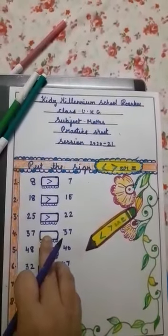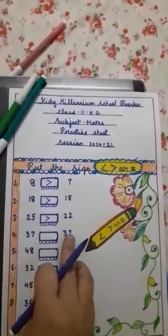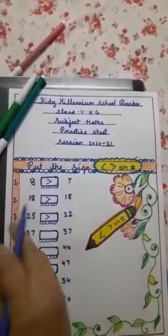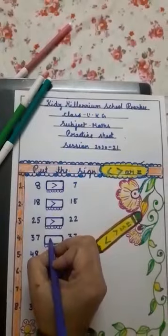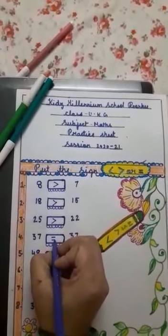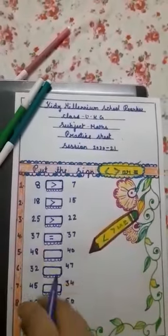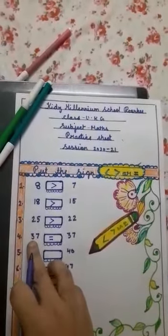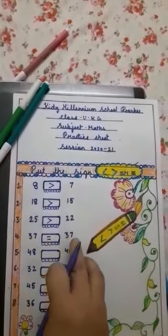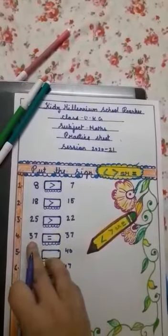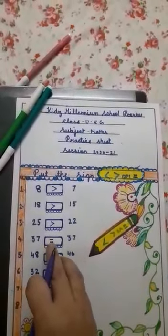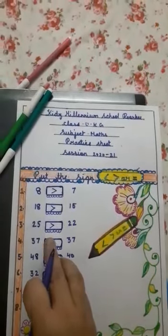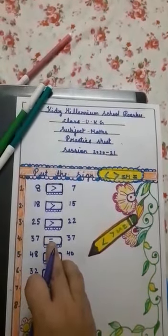Next: 37 blank space 37. Both numbers are the same, so here we have to add the equal to sign.